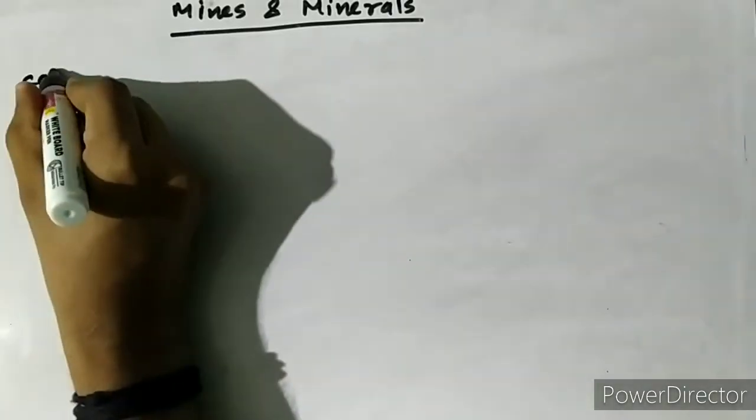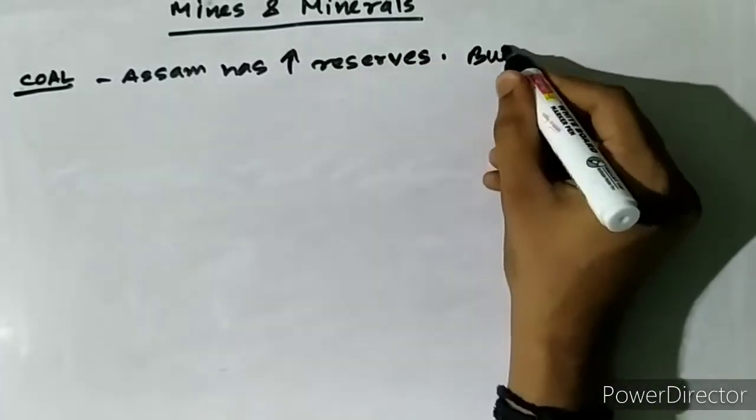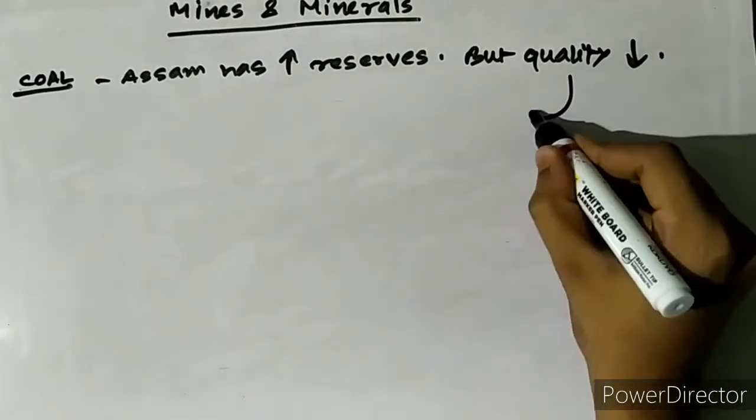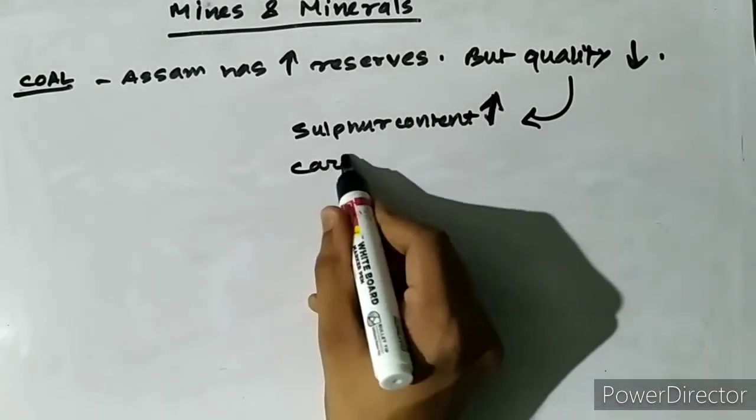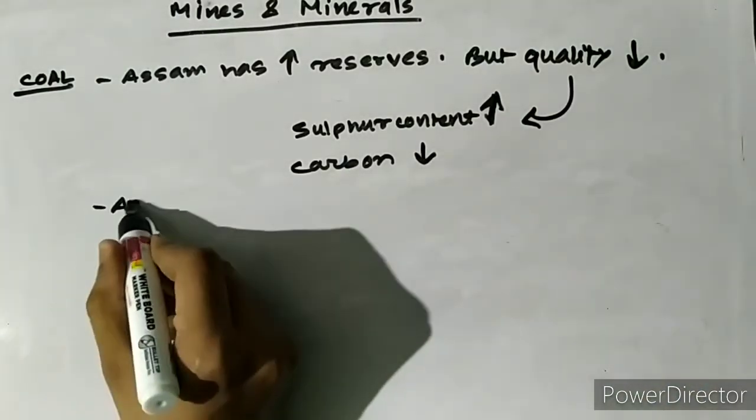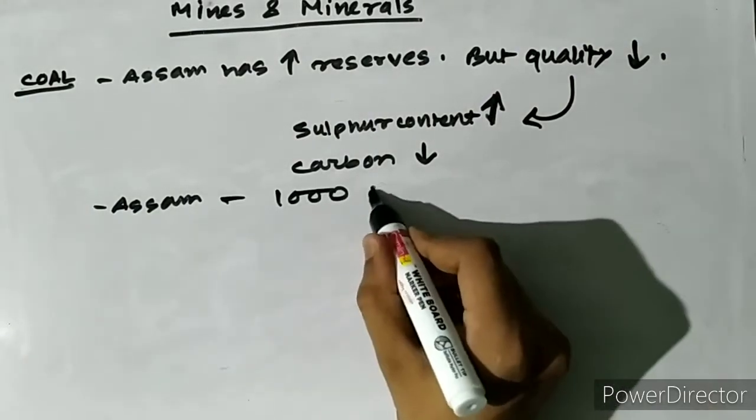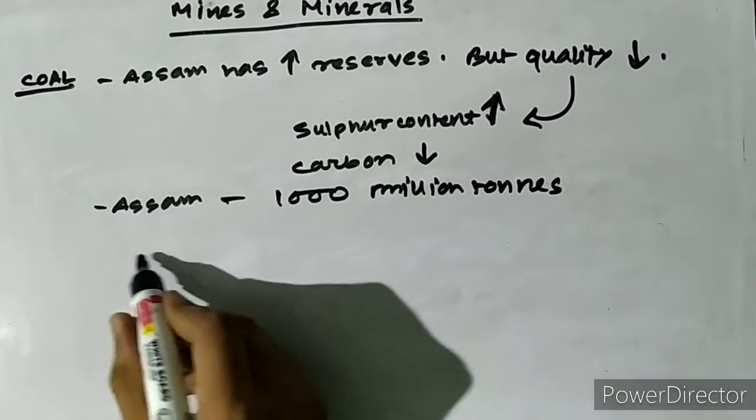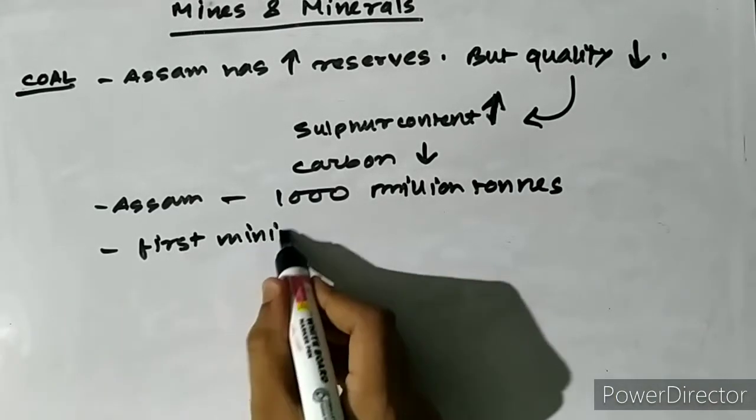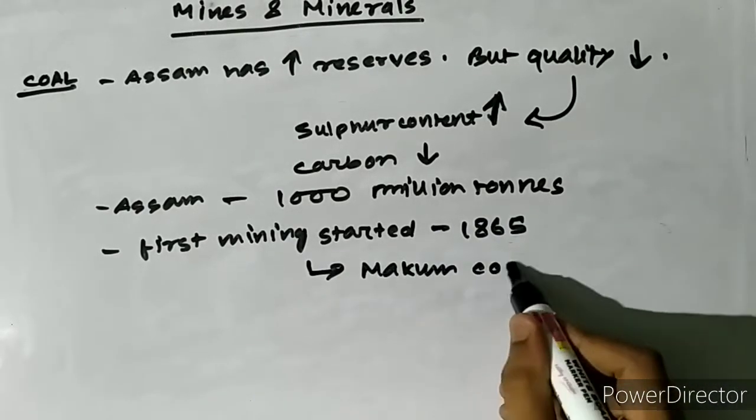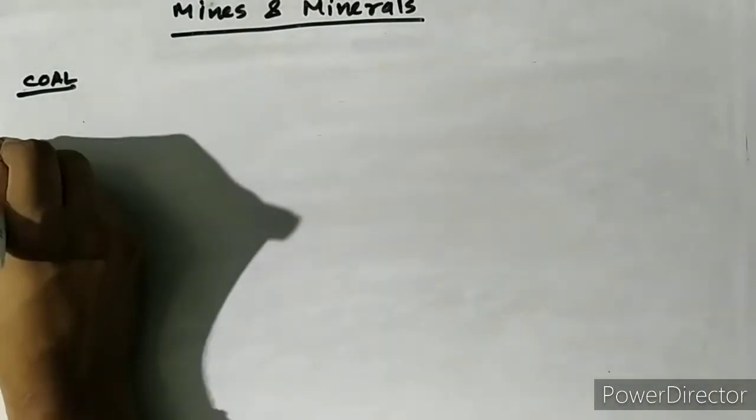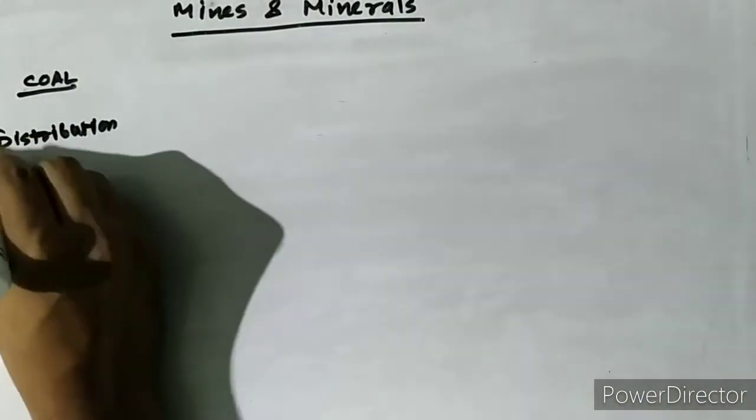Now we'll see the most available and important mineral of Assam, which is coal. Assam has large reserves of coal, however the quality of coal so far found is not very good because the sulfur content is very high and the carbon content is relatively low. Assam is said to contain about 1000 million tons of coal reserves. The first coal mining started in 1865 at the Makum coal fields.